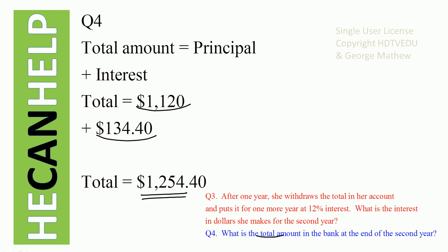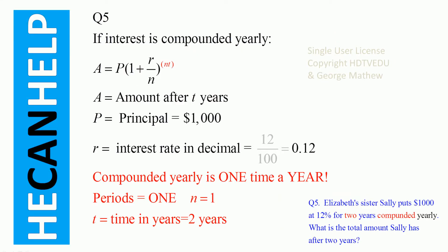Before we do question number five, consider this: if she had not withdrawn, she would have gotten $120 every year, and at most $240 for two years. Instead of $240, she has $254.40. She is smart.